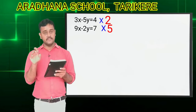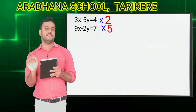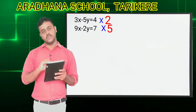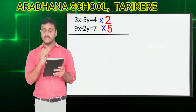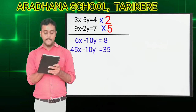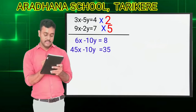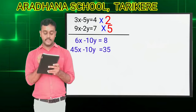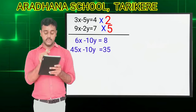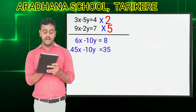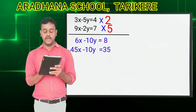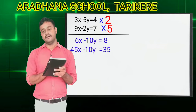I will multiply 5 with the second equation and multiply 2 with the first equation. Be careful when you are multiplying — you have to multiply with the entire equation. So the result is: 6x minus 10y is equal to 8. That is the first equation multiplied by 2. And the next equation: 45x minus 10y is equal to 35.